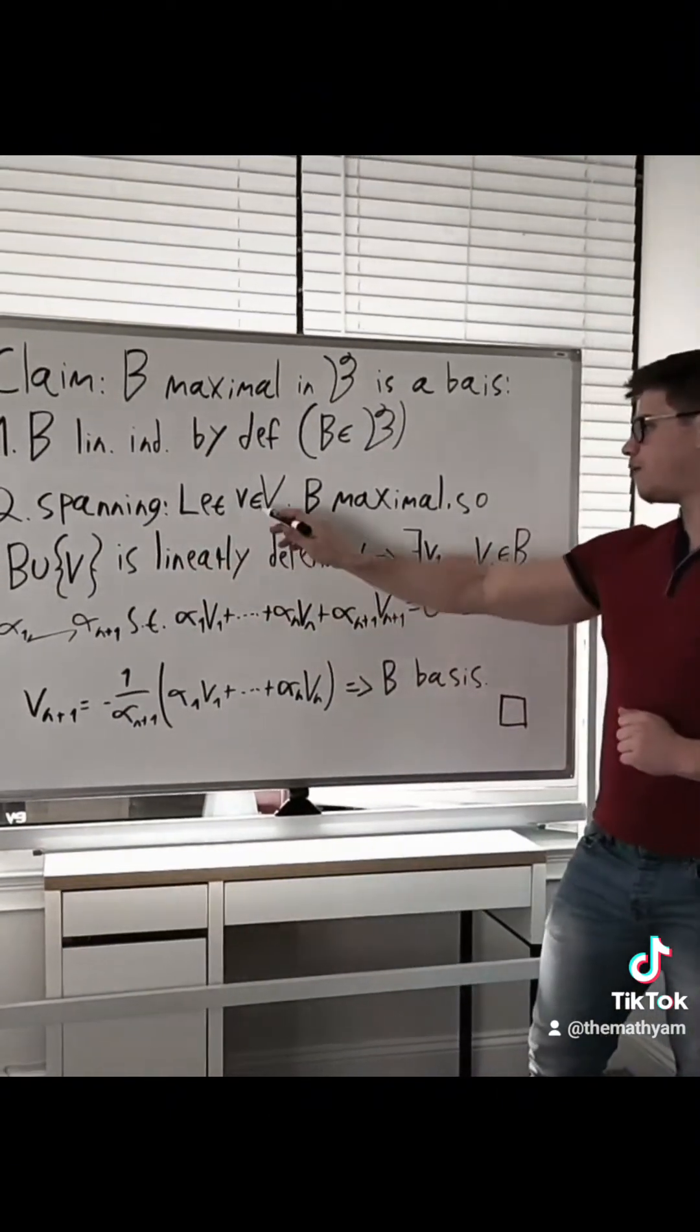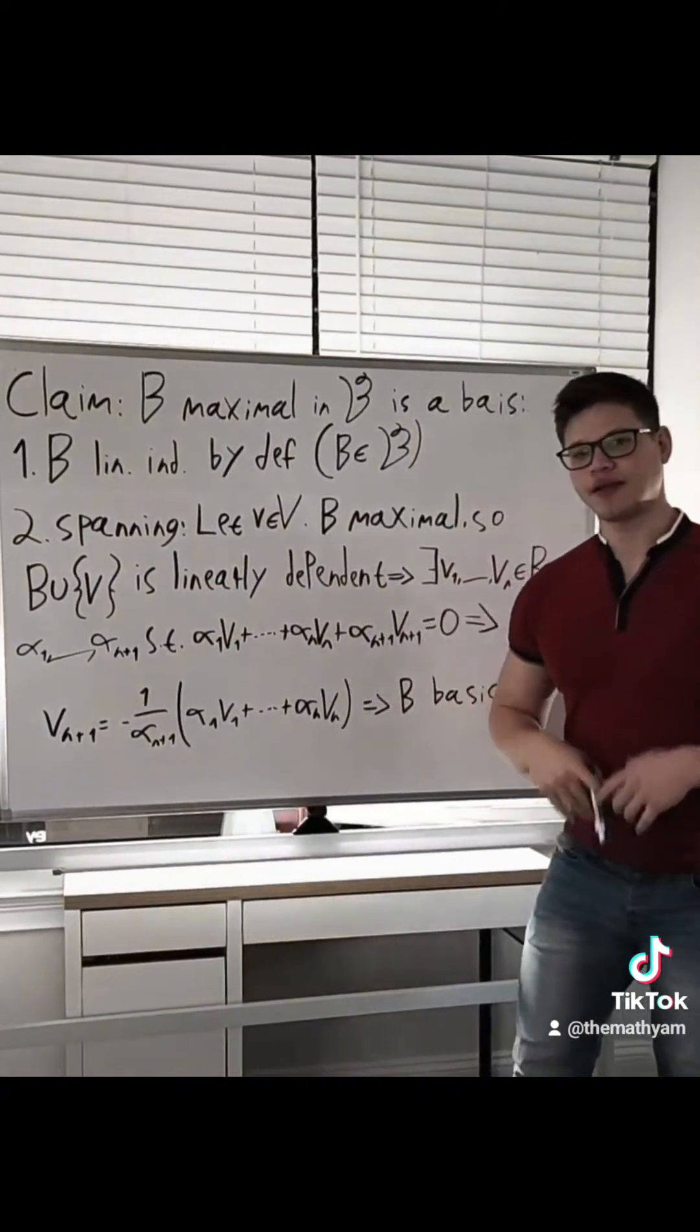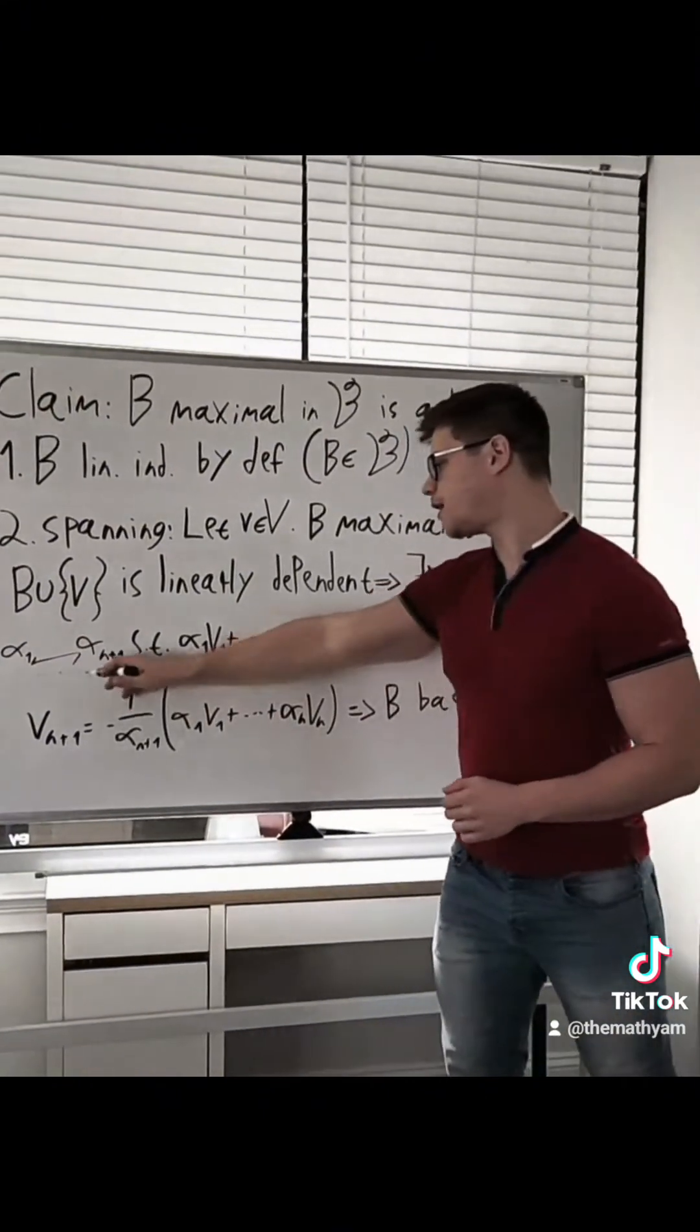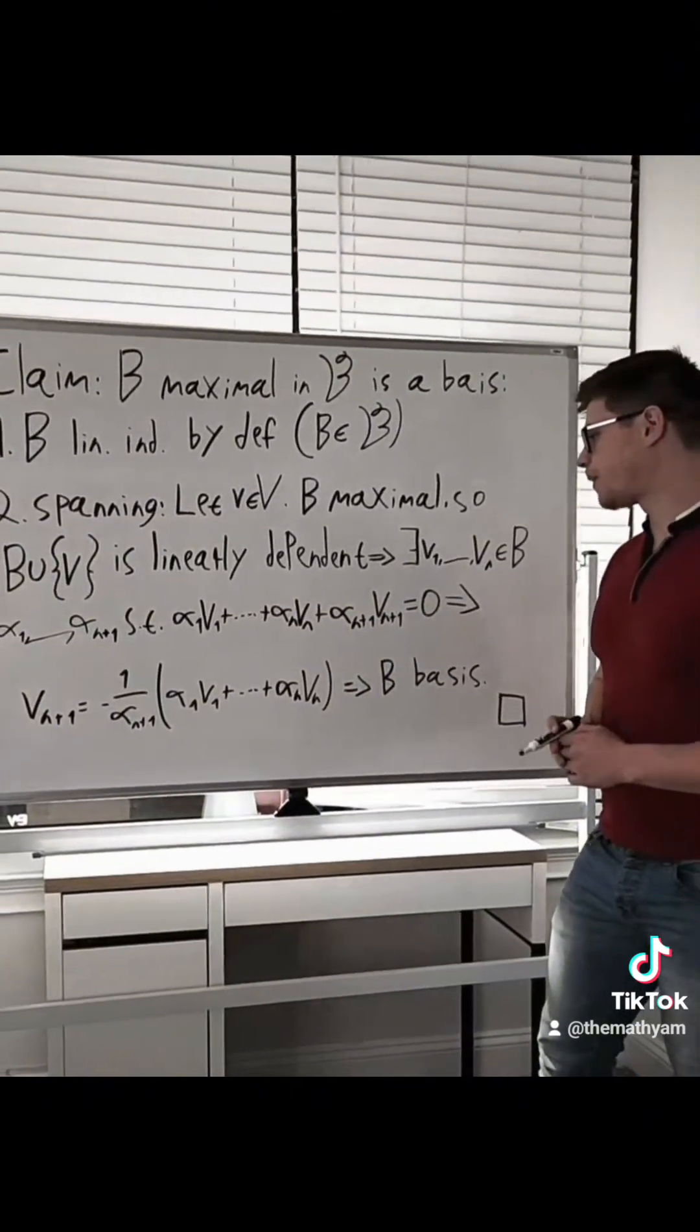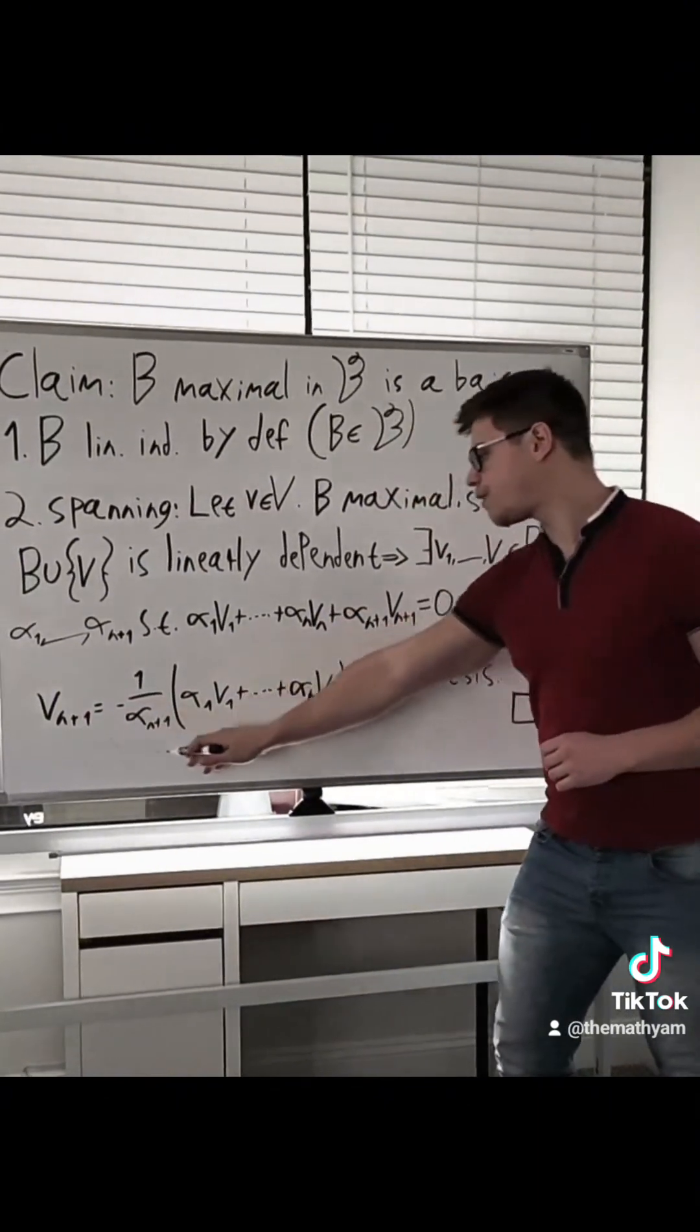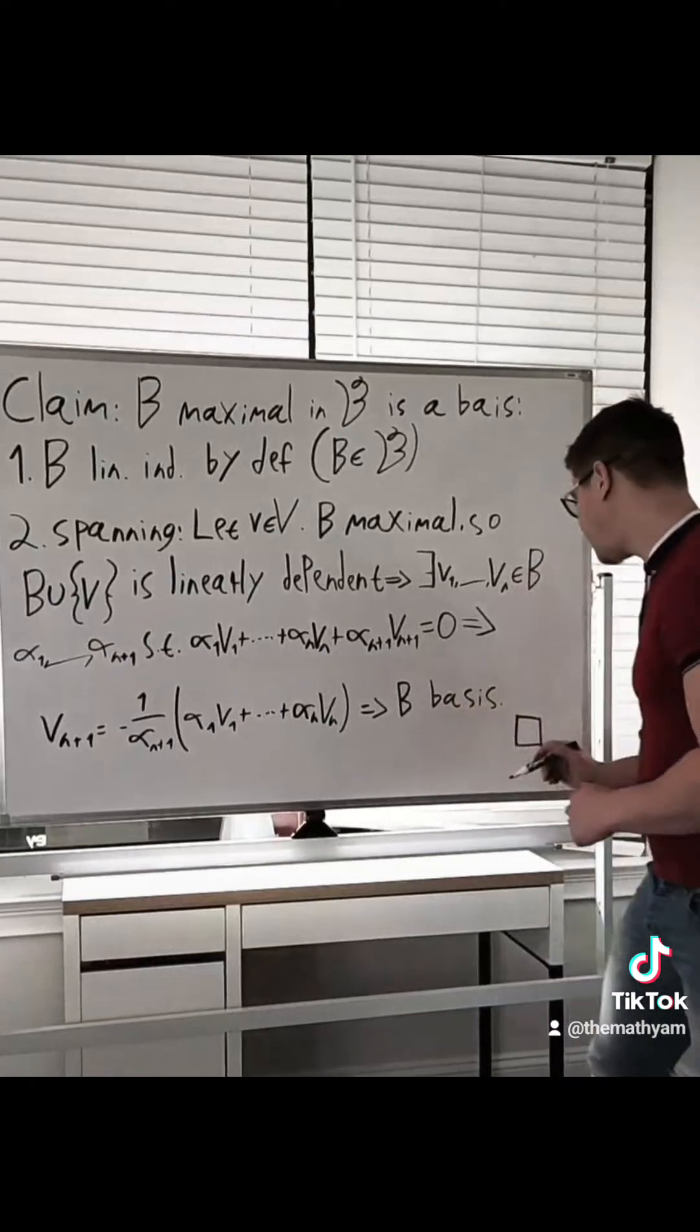So let's take a vector v in V. B is maximal with respect to being linearly independent, so if we add the vector v to it, we get that this set has to be linearly dependent. Now, this means that there are some V1 up to Vn in B and some scalars such that we get a non-trivial linear combination that gives us zero. Now, I'm going to let you think about why alpha n+1 here has to be non-zero, but assuming that it is, we get that Vn+1 can be written as this linear combination of vectors from B, and this shows us that B spans. This gives us that B is a basis, and that finishes our proof.